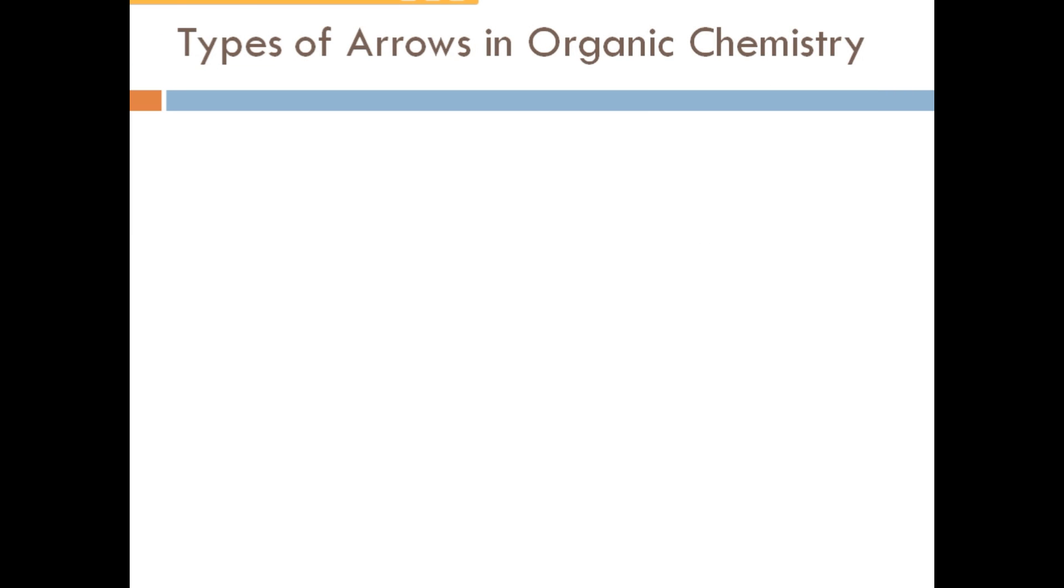What are the types of arrows in organic chemistry? There are 7 types of arrow.